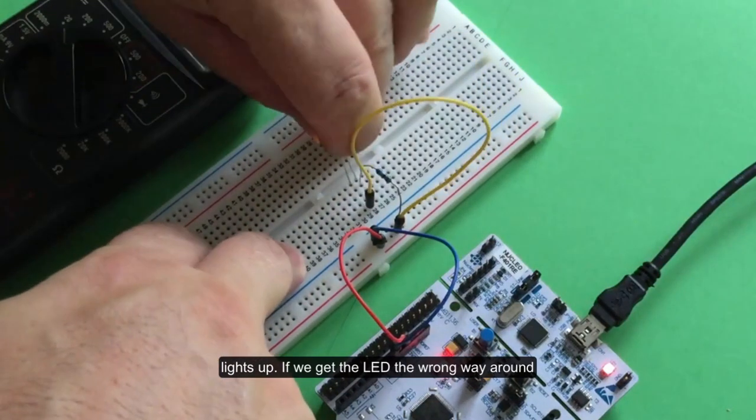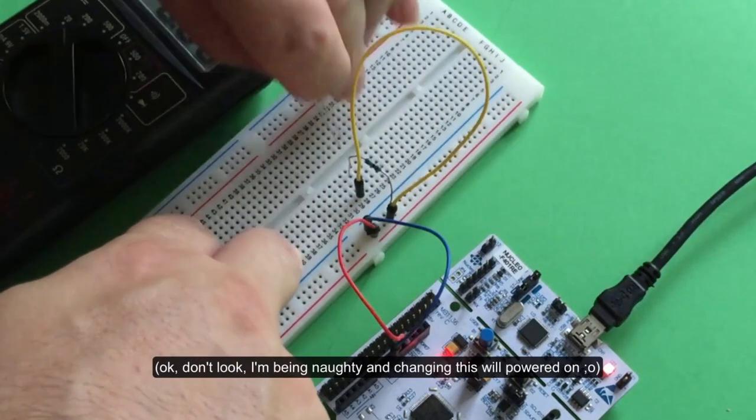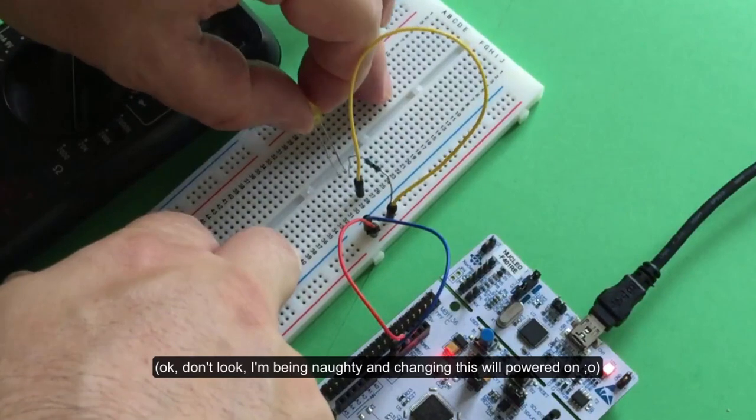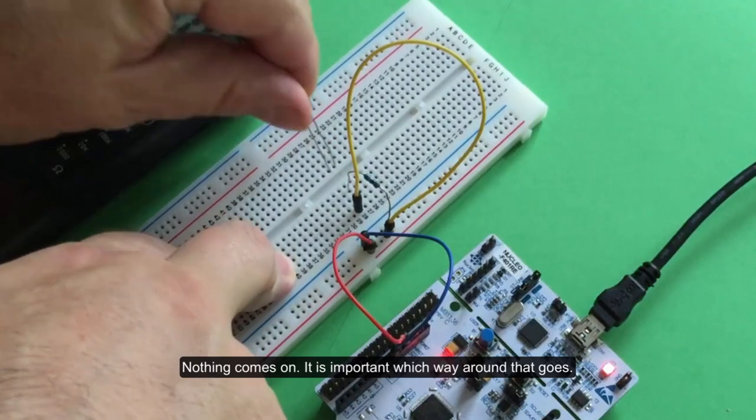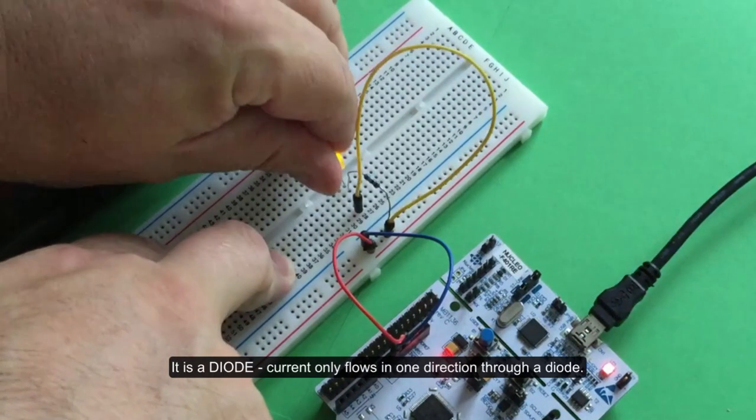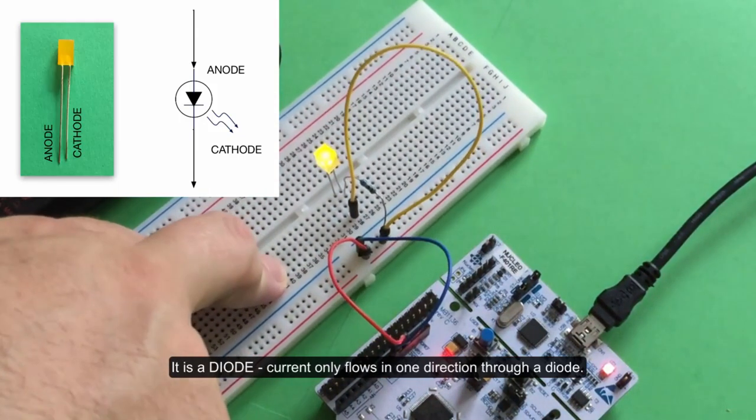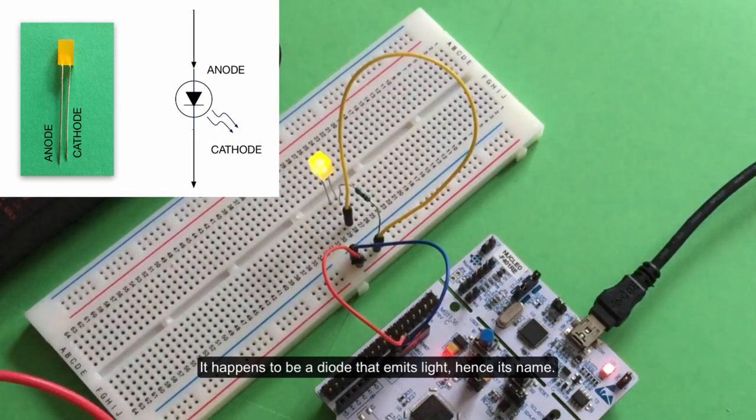Now, if we get the LED the wrong way around - I'm going to be naughty and do this while it's powered on - you'll see that nothing comes on. So it is important which way around that goes. It is a diode. Current only flows in one direction through a diode. It just happens to be a diode that makes light, hence its name.